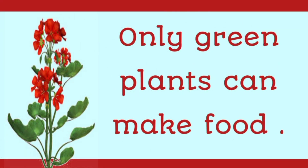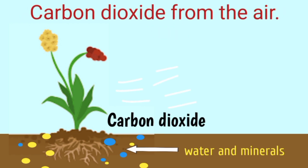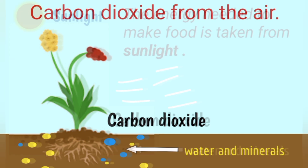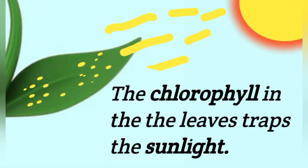Only green plants can make food. A plant gets water and minerals from the soil, and carbon dioxide from the air. The energy needed to make food is taken from sunlight, and the chlorophyll in the leaves traps the sunlight.